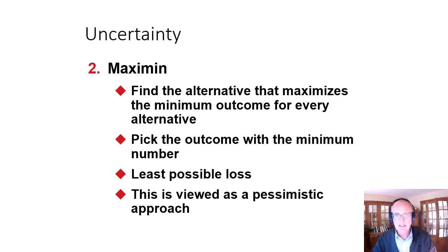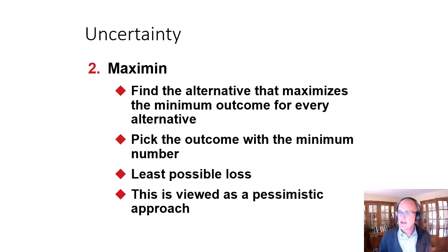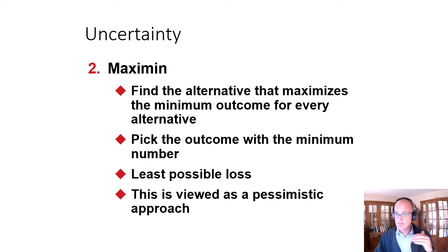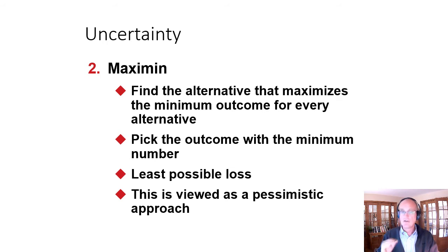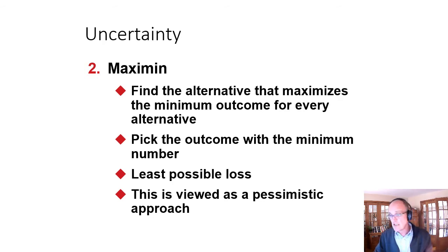We can also do maximin, which finds the alternative that maximizes the minimum outcome for every alternative — meaning we want to choose the outcome with the least bad result. In that case, we would pick the 'do nothing' approach because both the large plant and the small plant had losses if the market was unfavorable. With 'do nothing,' the maximum minimum is zero. If we want to avoid the worst case scenario — the pessimistic approach — we would use the maximin criterion.